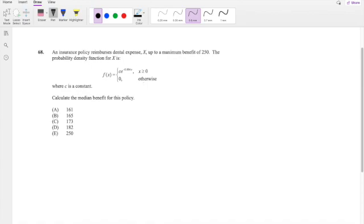An insurance policy reimburses dental expense up to a maximum benefit of $250. The maximum amount they're going to pay is $250, and the density function is given. Before $250, the benefit for the policy, which I'm going to denote by Y, is the loss. But after $250, no matter what, it's going to be $250.